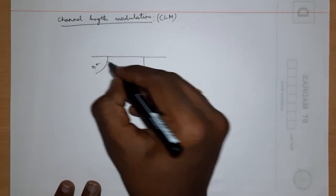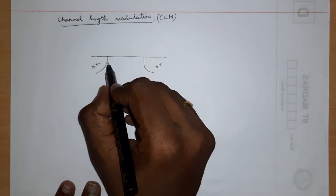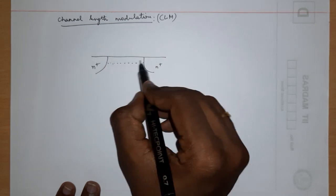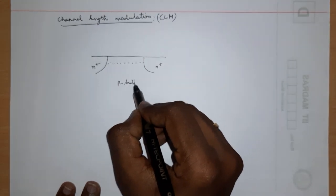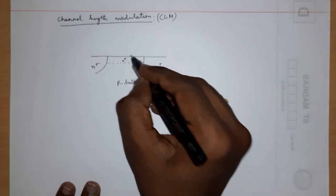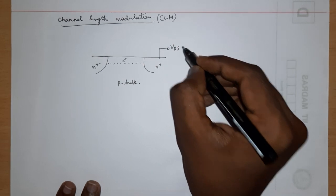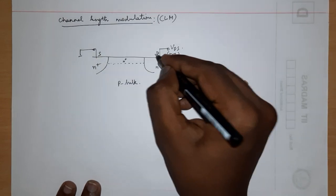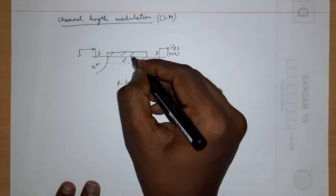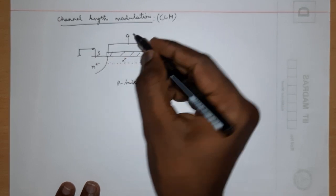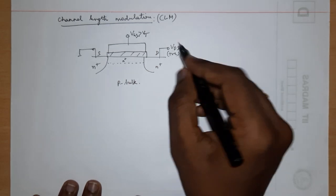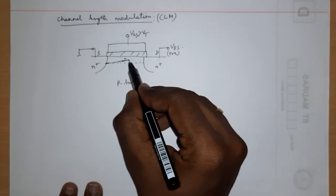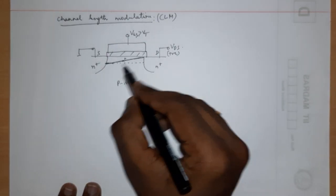Consider an N-MOSFET. I'm not drawing the gate and all these things initially. Because of the positive voltage at the gate, a channel is formed — the P-bulk is being inverted. As you apply more and more positive VDS, with the source grounded and drain on the other side, when VGS is greater than VT and you apply more and more VDS, the channel starts to pinch off.